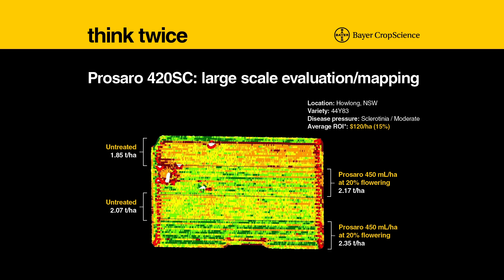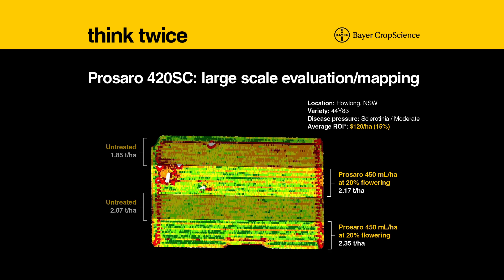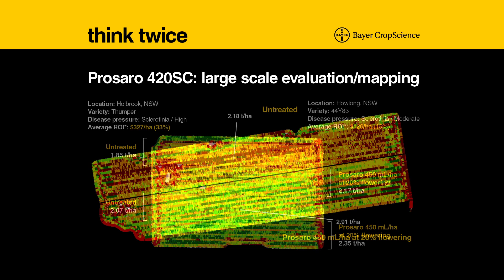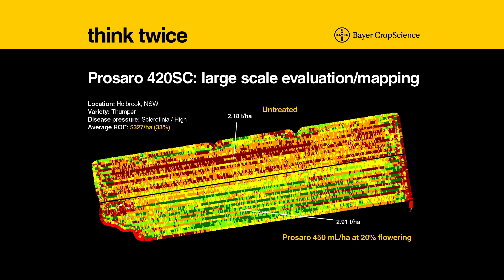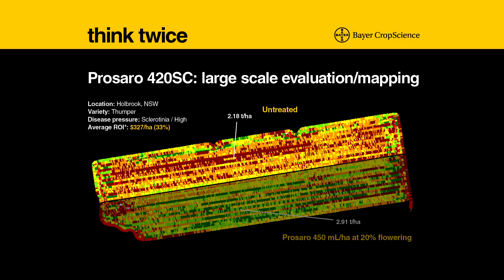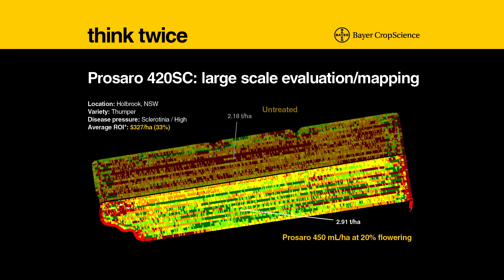Yield maps here show no treatment — you can see a lot more orange — and a lot more green where we've got our Prozaro. We had 1.85 tonnes per hectare going up to 2.17 with Prozaro, about a 15 percent response at this site. And this next site is an even more impressive response — a lot of red in the untreated, and Prozaro doing a very good job under very high pressure in Thumper.